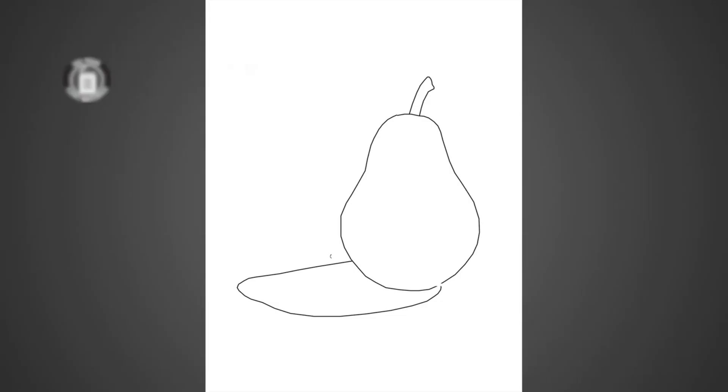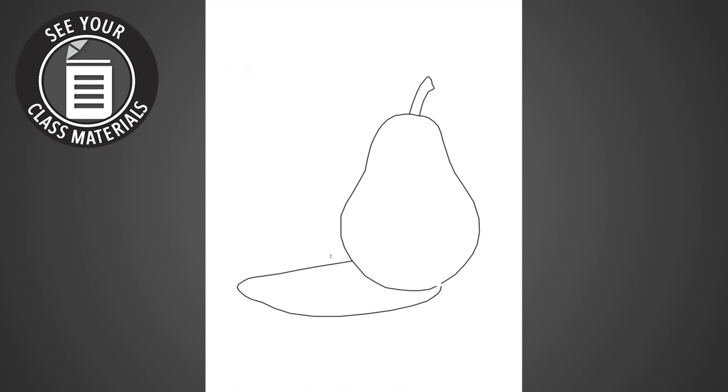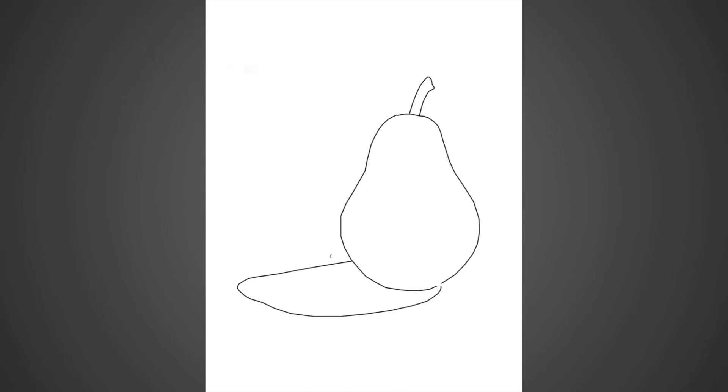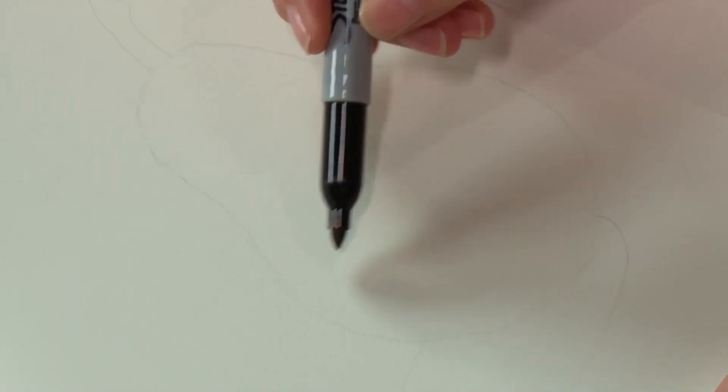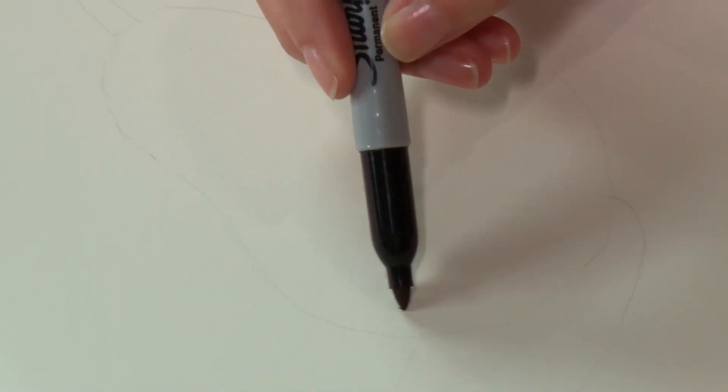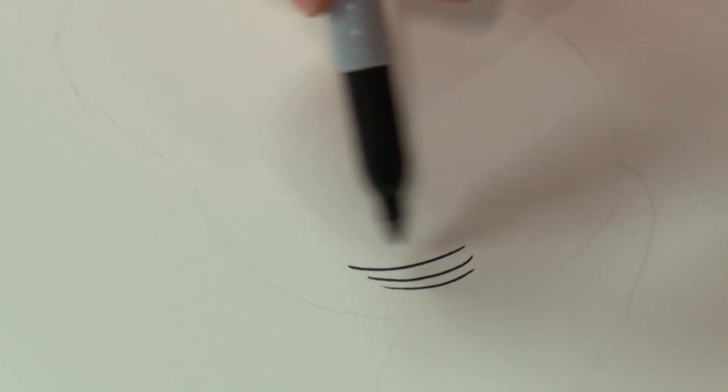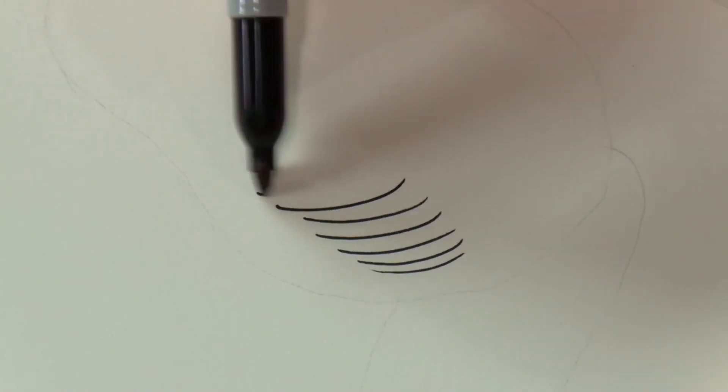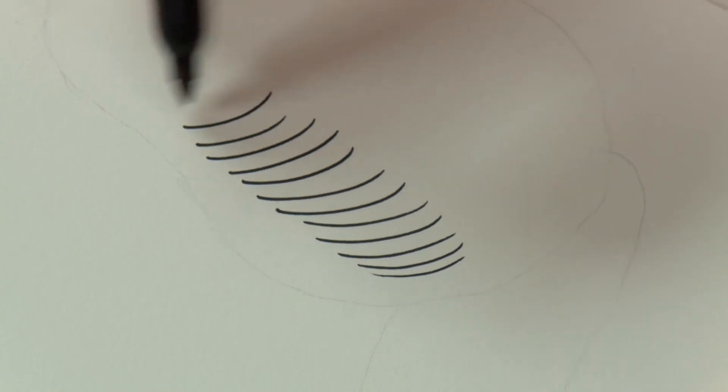So let's move into hatching and cross hatching. I have the same outline of a pear, but with less detail drawn on the inside this time. And I am going to lay down some hatching and cross hatch marks to shade this in. So as before, I'm going to go ahead and start with the dark area.